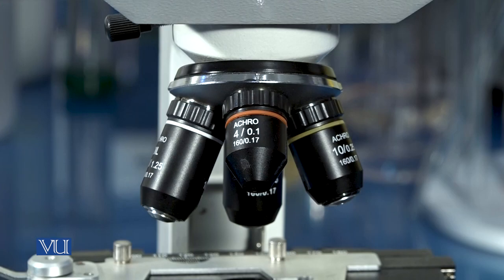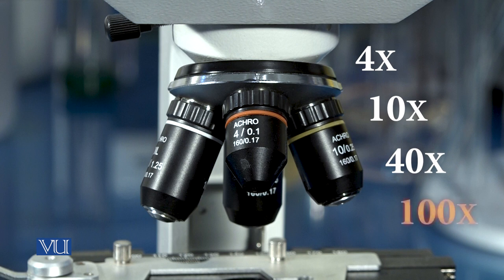A compound microscope usually has four objective lenses which are of magnification 4x, 10x, 40x, and 100x.